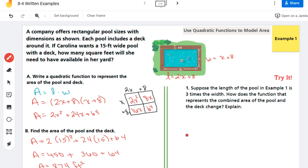So now in the Try It, now they're kind of switching it up just a little bit. They say suppose that the length of the pool is actually 3 times the width. So instead of having a 2 here, we have a 3. How does the function that represents the combined area of the pool and the deck change? So we're wondering what effect this is going to have in terms of her final number here.